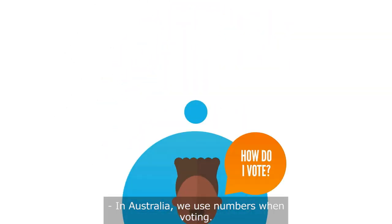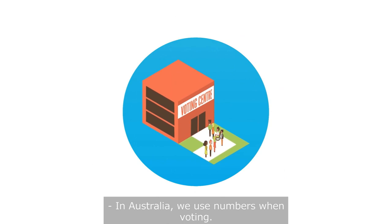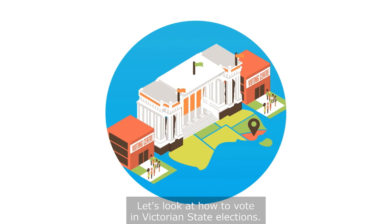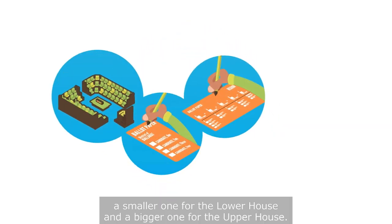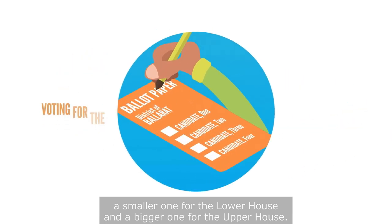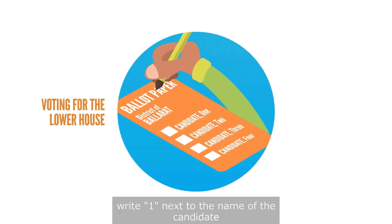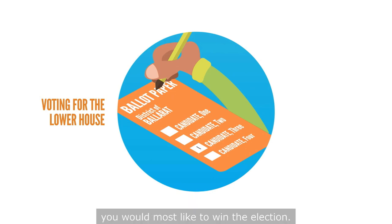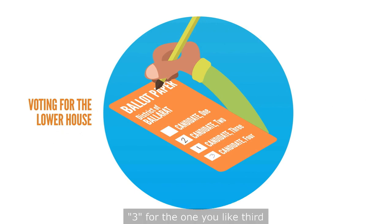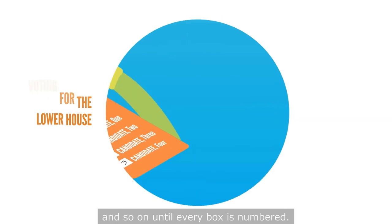How do I vote? In Australia, we use numbers when voting. Let's look at how to vote in Victorian state elections. You get two ballot papers, a smaller one for the lower house and a bigger one for the upper house. To vote for the lower house, write one next to the name of the candidate you would most like to win the election. Then write two for the candidate you like second, three for the one you like third and so on until every box is numbered.